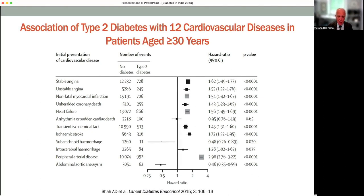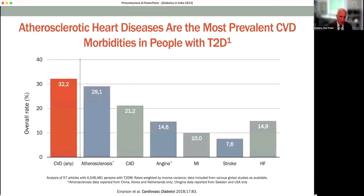Atherosclerosis is very common in people with type 2 diabetes. In another study analyzed in a population described in more than 57 articles, including a total of more than 4.5 million people with type 2 diabetes, it has been calculated that at least one third of them already have cardiovascular disease.